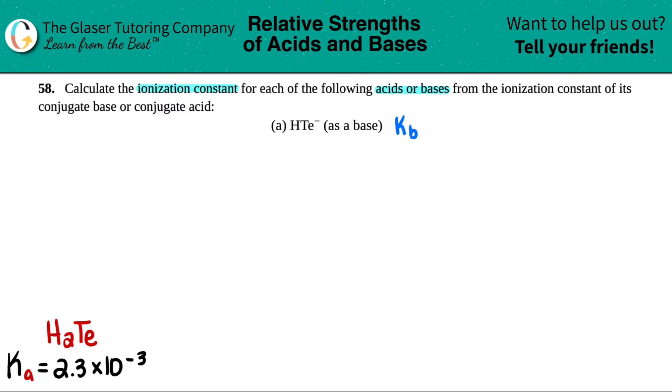So in essence, what we have to do is we just have to convert the Ka value into a Kb value. Okay, well, how do we do that? Well, one equation, and that's this formula right here. It's the Kw equation. Kw equals Ka times Kb.